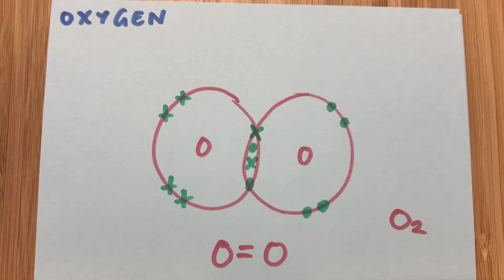So here we've got a sharing of two electrons from each atom. So in the centre there, we've got cross, dot, cross, dot. And that's represented as a double bond. So there's two pairs of electrons being shared there to complete each outer shell of electrons up to eight. And we write that as O2.